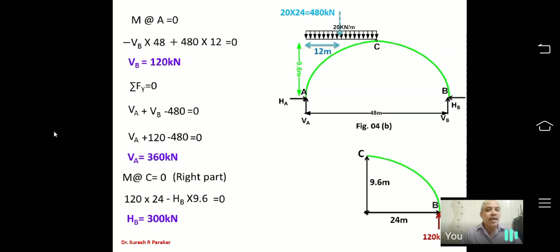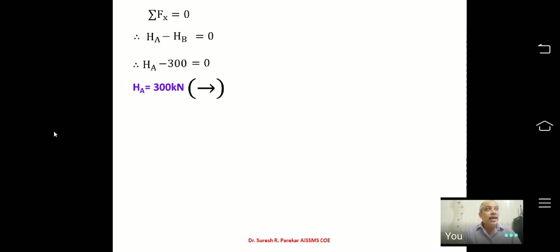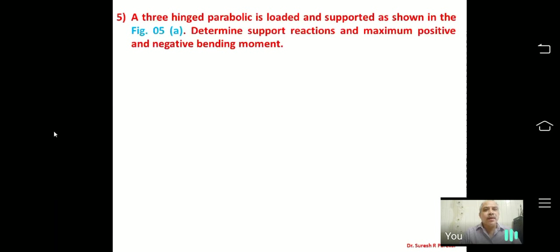Note: for this problem the arch equation is given, so we cannot use Y = 4HX(L−X)/L² directly. Now we move to the third problem: a three-hinged parabolic arch loaded with a concentrated load. Determine the support reactions and the maximum positive and negative bending moment.